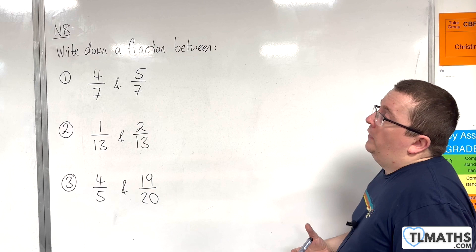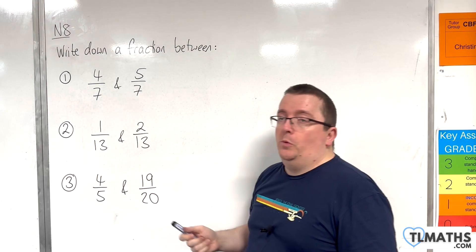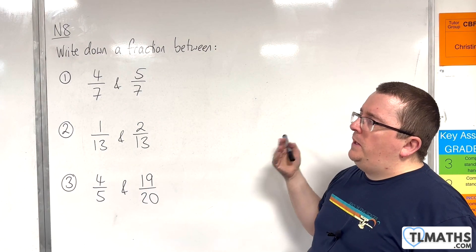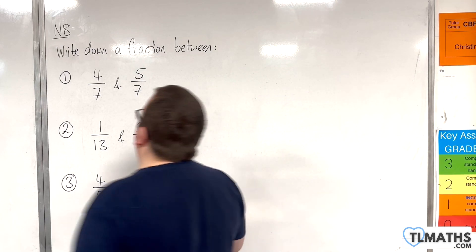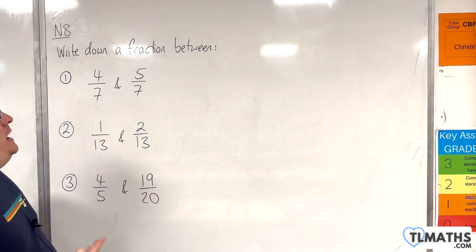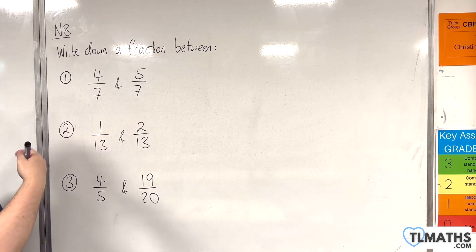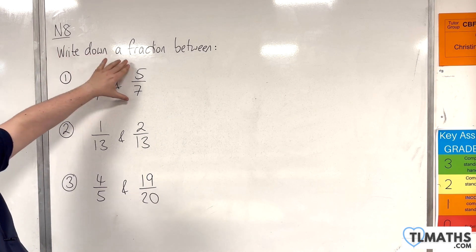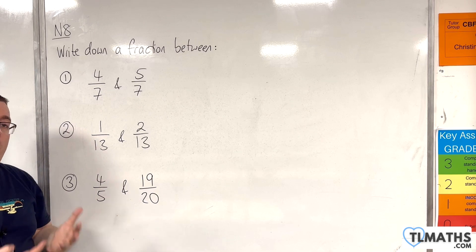In this video, we're going to look at some examples of finding a fraction that is between two others. In the first example, we have to find a fraction that is between 4 sevenths and 5 sevenths. As I showed in the previous video, there is a relatively straightforward way of doing this. If I multiply each of these numbers by 2, it's going to give me two equivalent fractions, and then I'm going to be able to spot a fraction in between.